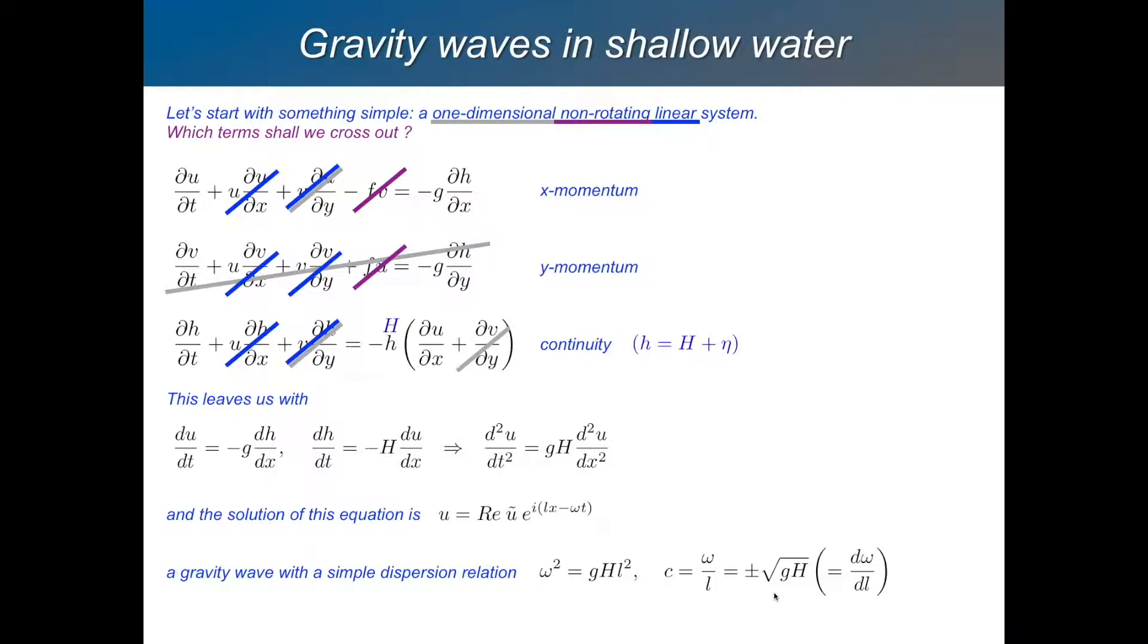So all different wavelengths will travel at the same speed. Any structure which is made up of a collection of different wavelengths will just propagate without losing its shape. So that's why what we say is there's no dispersion. So that's why they're called non-dispersive. And the group speed, d omega by d L, is the same as the phase speed because it's just a linear relationship between omega and L.